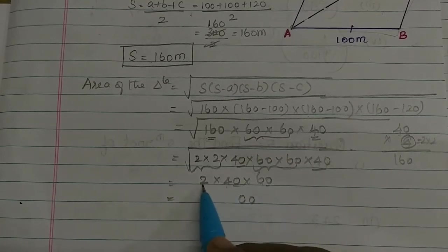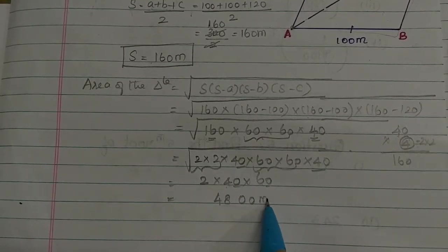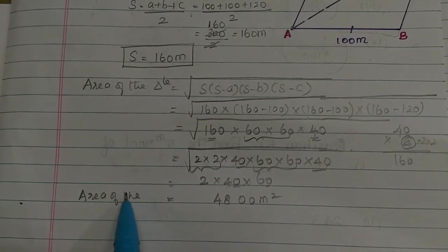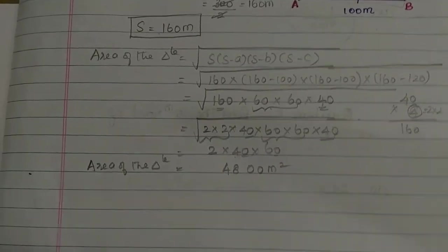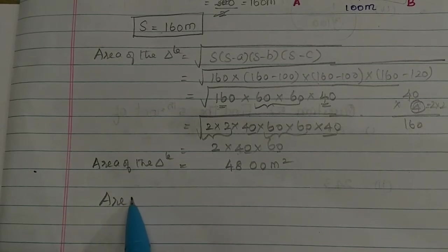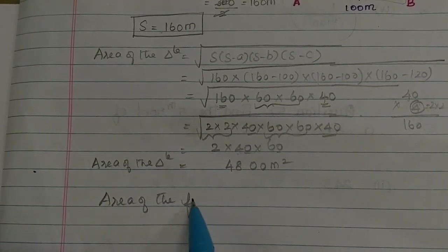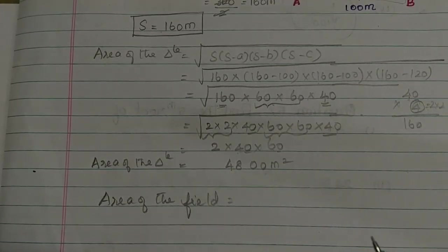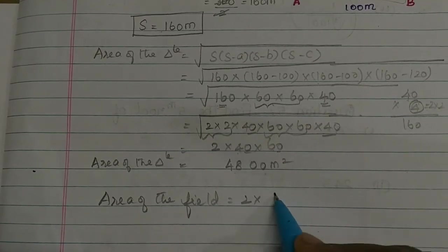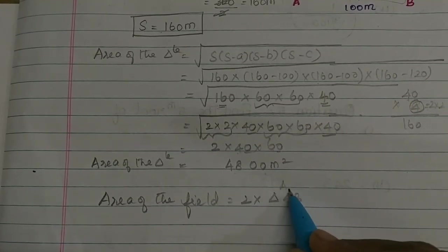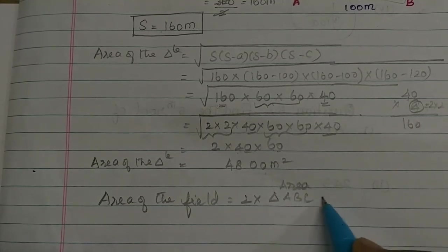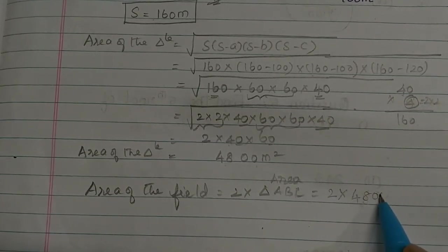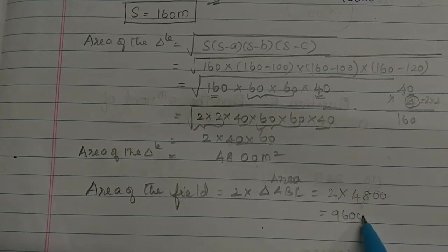Working through the calculation: 6 times 4 is 24, and 24 into 2 gives 4800 square meters. So the area of one triangle is 4800 m². The area of the field equals two equal triangles — one triangle is 4800 and the other triangle is 4800. So area of field equals 2 times area of triangle ABC, which equals 2 into 4800, giving 9600 square meters.